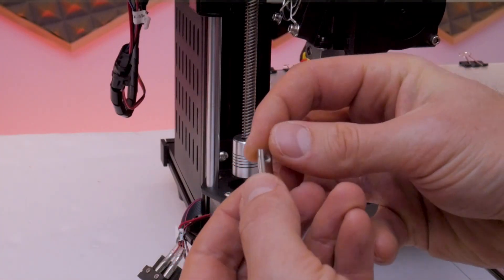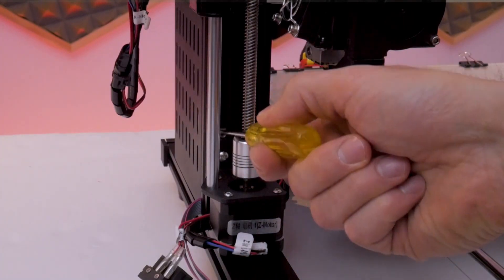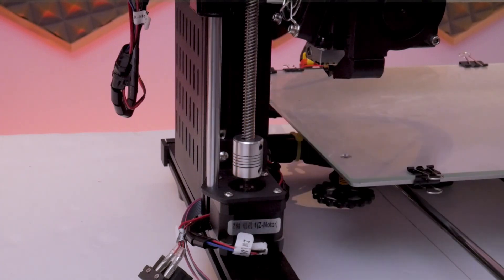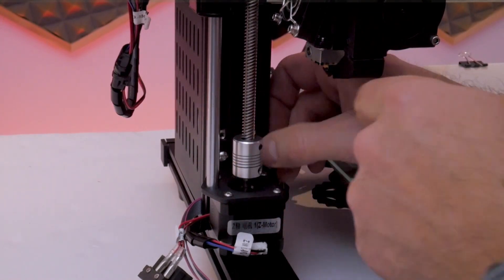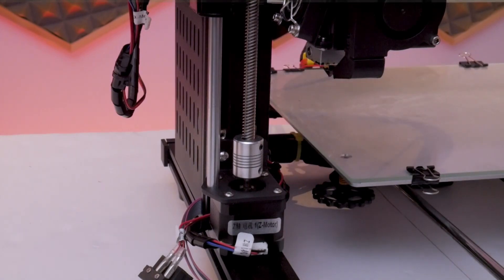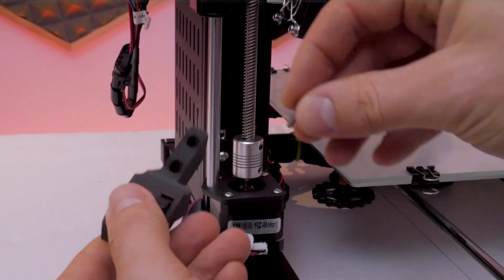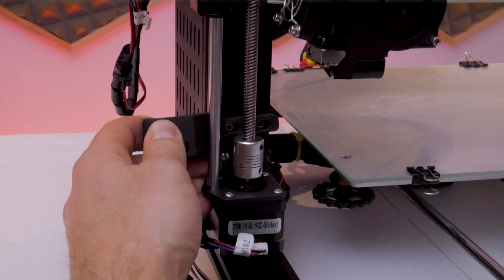After that you'll need two M3 T-nuts. I'm using these self-retaining T-nuts because wherever you put them in the aluminum extrusion they'll stay in place even if the channel is vertical. You don't have to use these; regular M3 T-nuts work too, it just might be a little more difficult to get them into the channel and hold them in place while fastening down these M3 by 10 socket head cap screws.